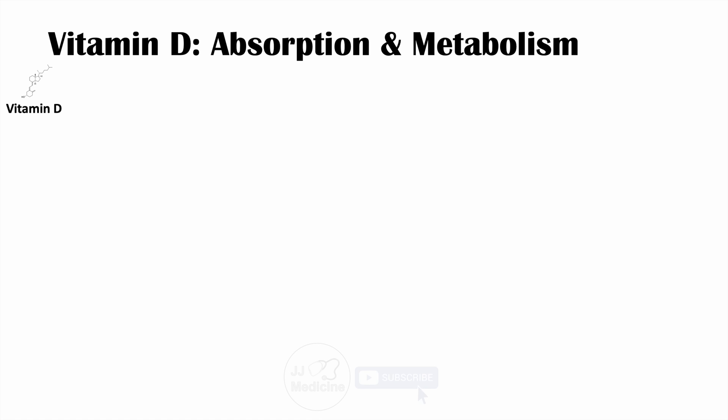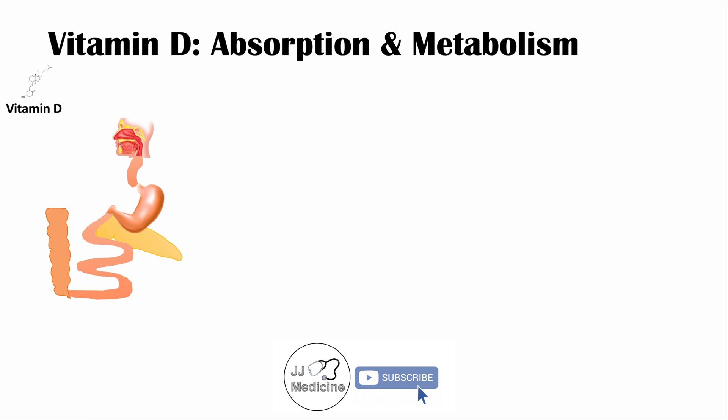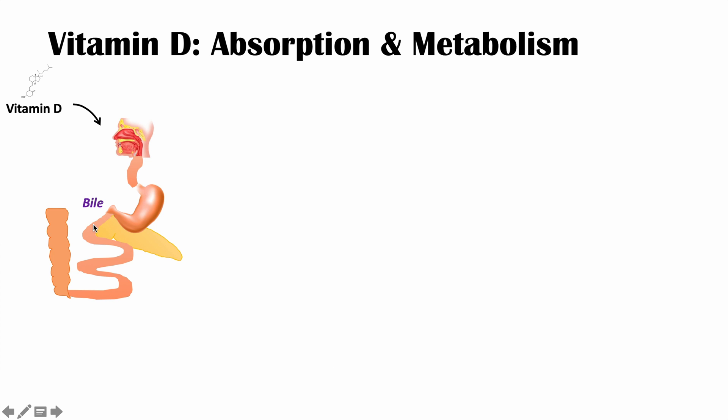So how is vitamin D absorbed and metabolized? When you ingest it, or when it's synthesized in your skin from sunlight exposure, what happens? I'll first briefly talk about vitamin D absorption when we actually ingest it from our diet. If we eat vitamin D from our diet, it goes into the gastrointestinal system.